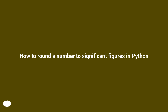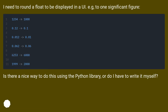How to round a number to significant figures in Python? I need to round a float to be displayed in a UI, for example, to one significant figure. Is there a nice way to do this using the Python library, or do I have to write it myself?